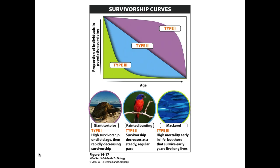With a type two survivorship curve, such as many songbirds, at any given age they are essentially just as likely to die as at any other age. As they get older, you would expect to see fewer and fewer of them, but the rate at which they would be expected to expire does not change much throughout their lifespan.